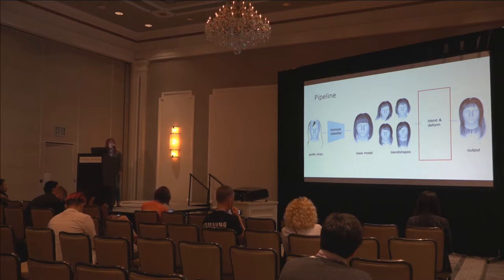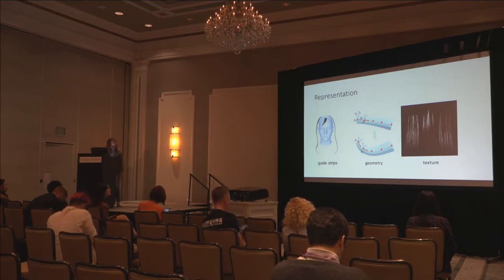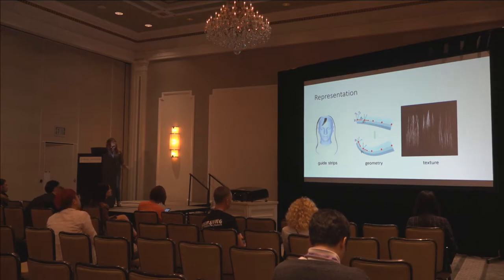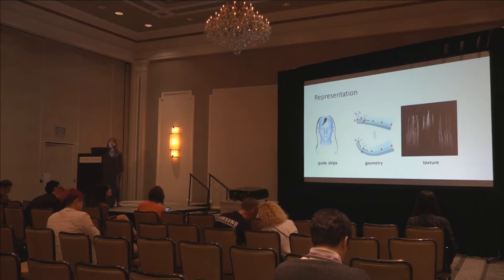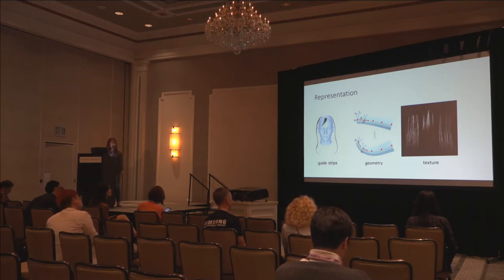We then decompose every component. As the minimum unit, each strip in our work is represented as a textured polygon. We uniformly sample anchor points along the middle axis. These anchor points are used for modeling the shape, and are also sent to our neural network for blending computation.